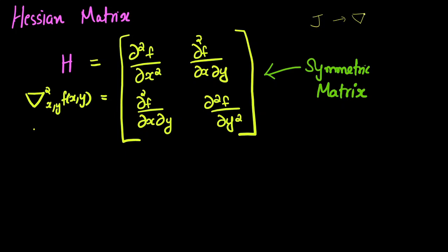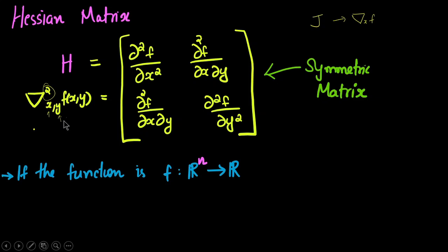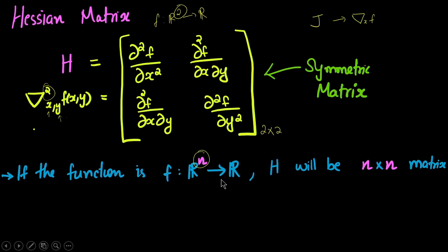Another notation for the Hessian is ∇²f(x,y). The Jacobian collected first order derivatives and was written ∇f, while the Hessian is second order so we add the square symbol: ∇²f(x,y). For a function f: R²→R with two variables, the Hessian matrix is 2×2. More generally, for f: Rⁿ→R with n variables, the Hessian is an n×n matrix.